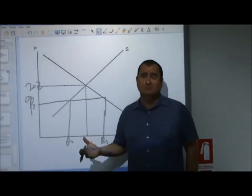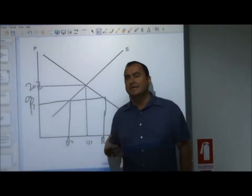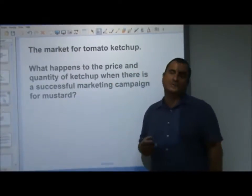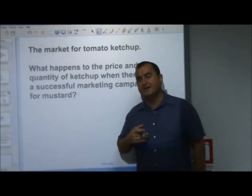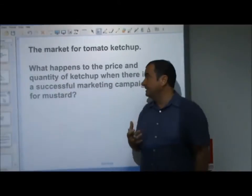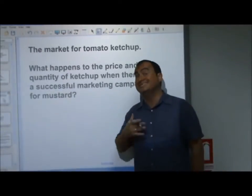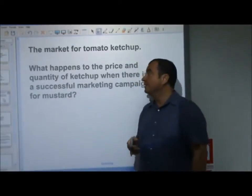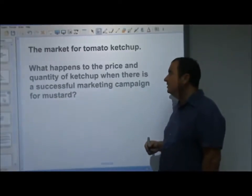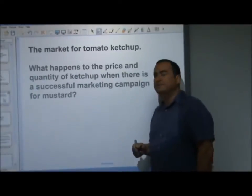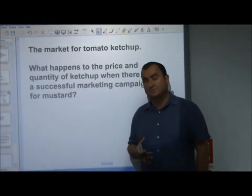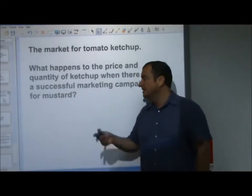The equilibrium is found by market forces acting in the market. Let's look at some examples of how price can be established and how it can change when one of the curves — demand or supply — is affected. Take a look at this example: the market for tomato ketchup. What happens to the price and quantity of ketchup when there is a successful marketing campaign for mustard? We explored in previous videos how demand or supply can change and cause a shift in the entire curve.